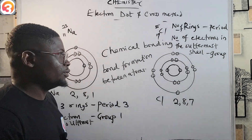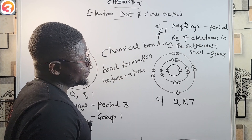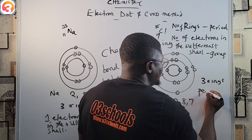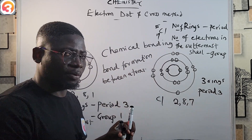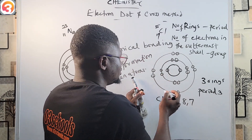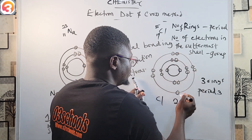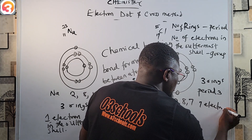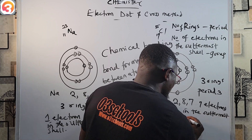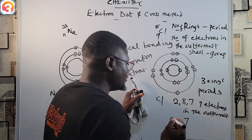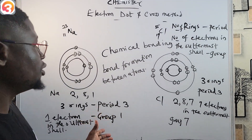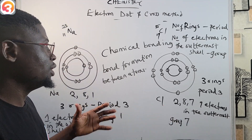For chlorine, it also has three rings, meaning it belongs to Period 3 of the periodic table. The outermost shell contains seven electrons — 1, 2, 3, 4, 5, 6, 7 — so seven electrons in the outermost shell means chlorine belongs to Group 7 of the periodic table. We can decipher the period and group of both atoms from their electron dot and cross diagrams.